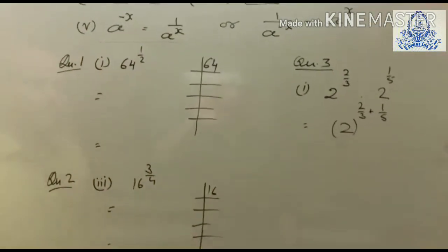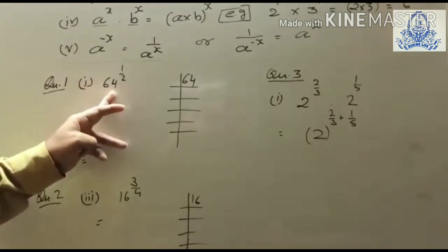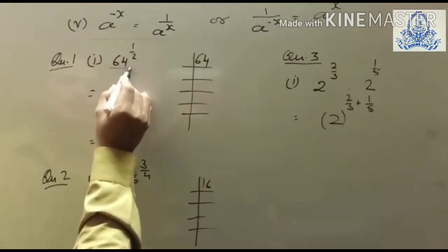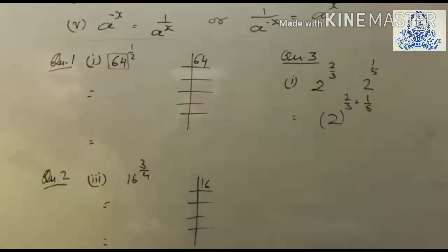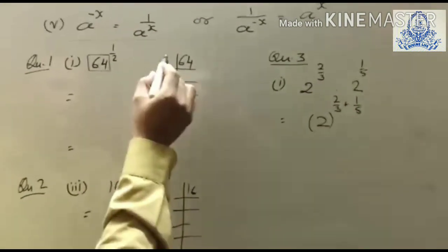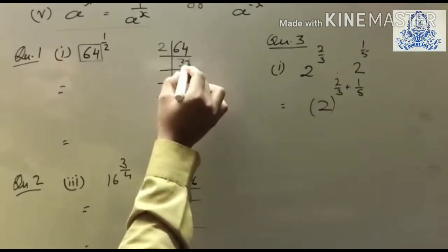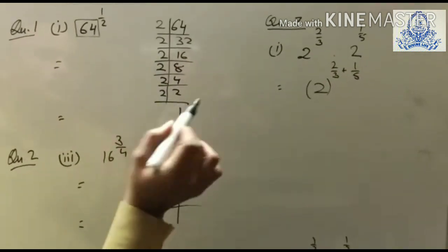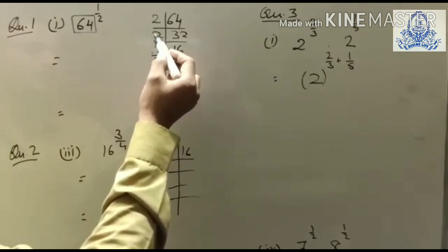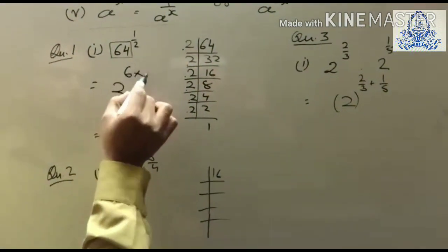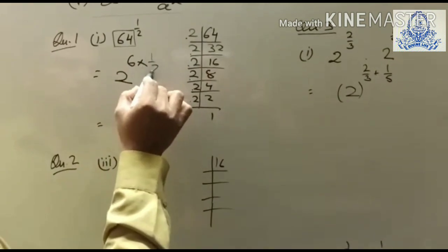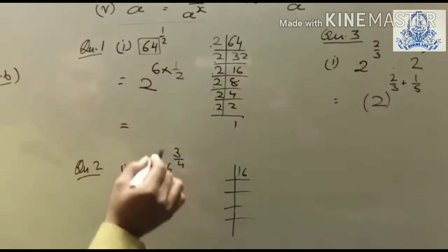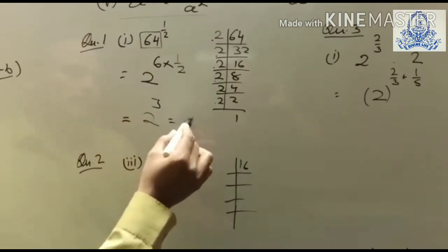Now we start the exercise from question 1: 64^(1/2). First, find the prime factors of the base 64. Breaking it down: 64 = 2 × 32 = 2⁶. So we write 2⁶ raised to 1/2. There is already an exponent, so multiply it with the given exponent: 6 × (1/2). The 2 and 6 cancel to give 3, so the answer is 2³ = 8.